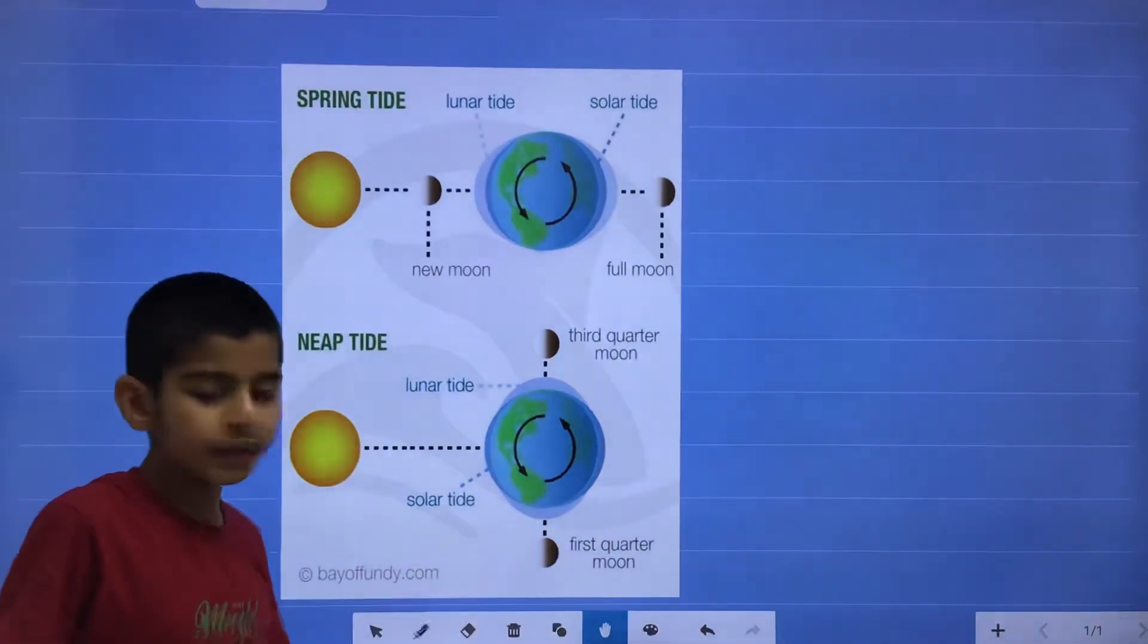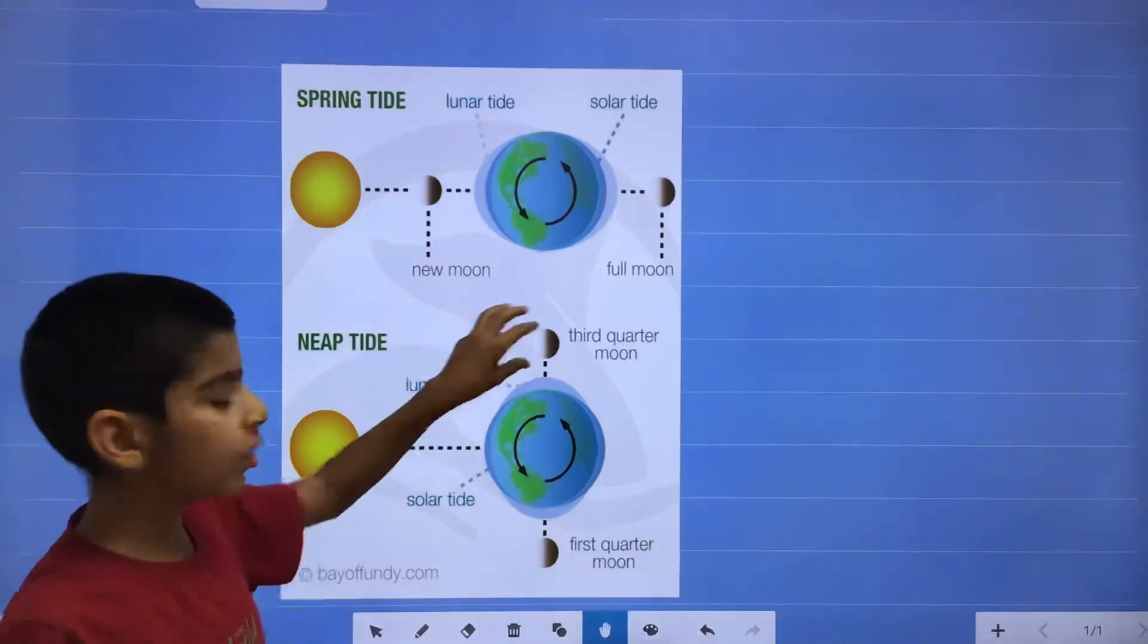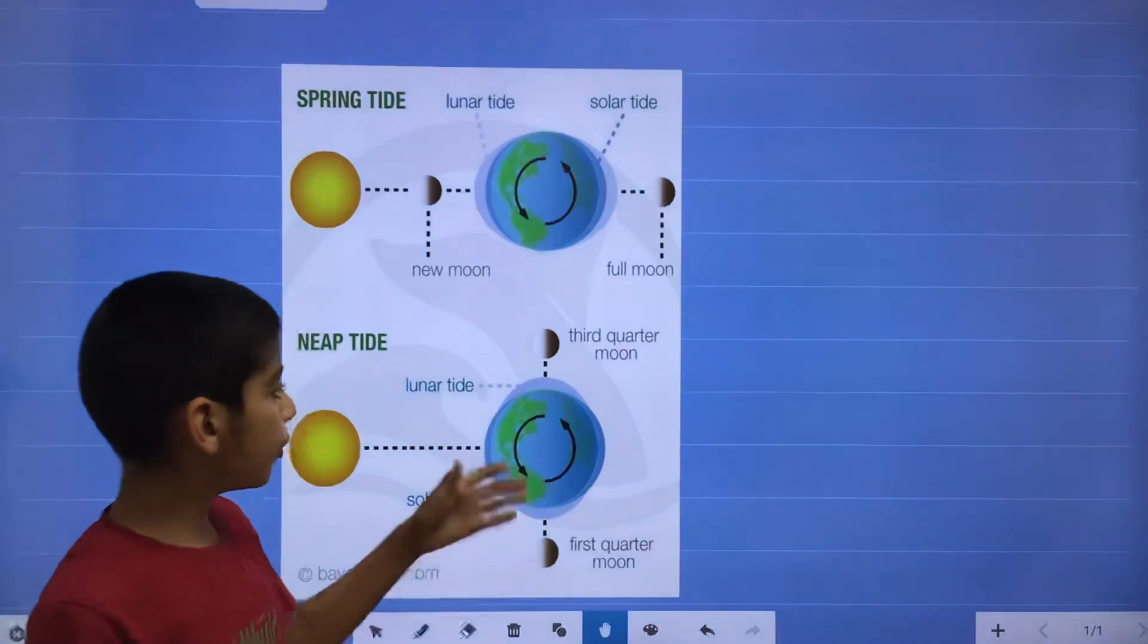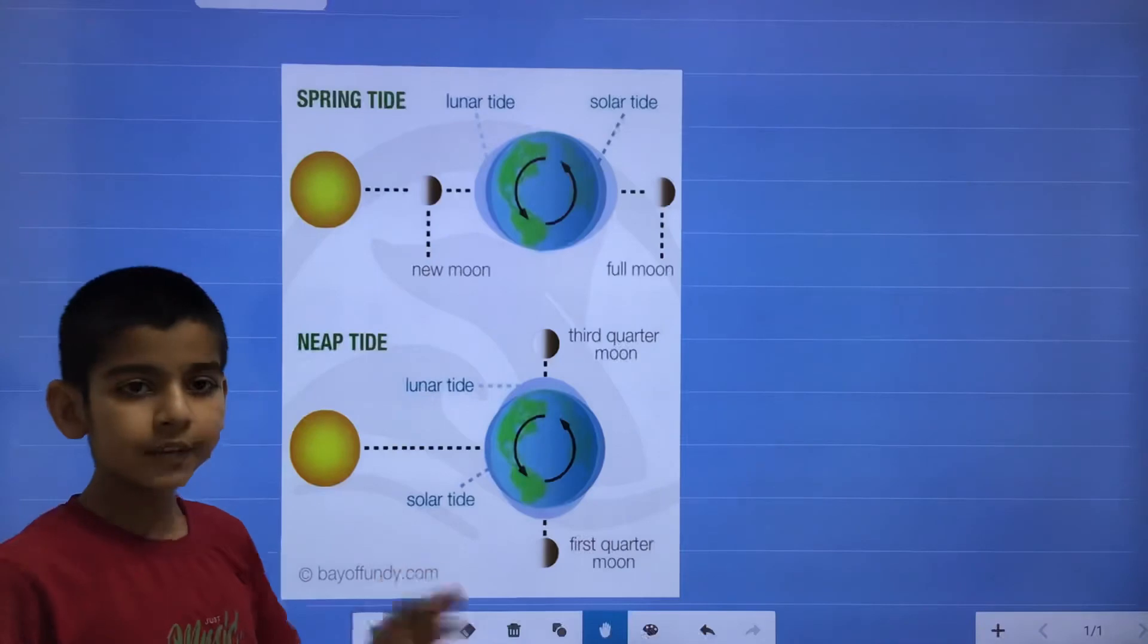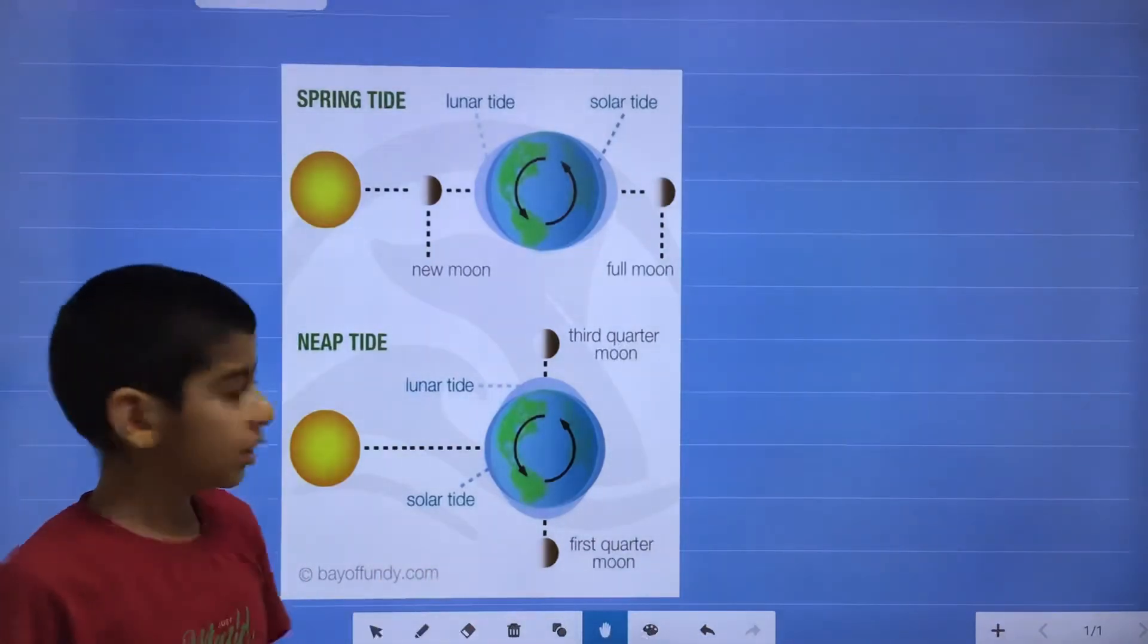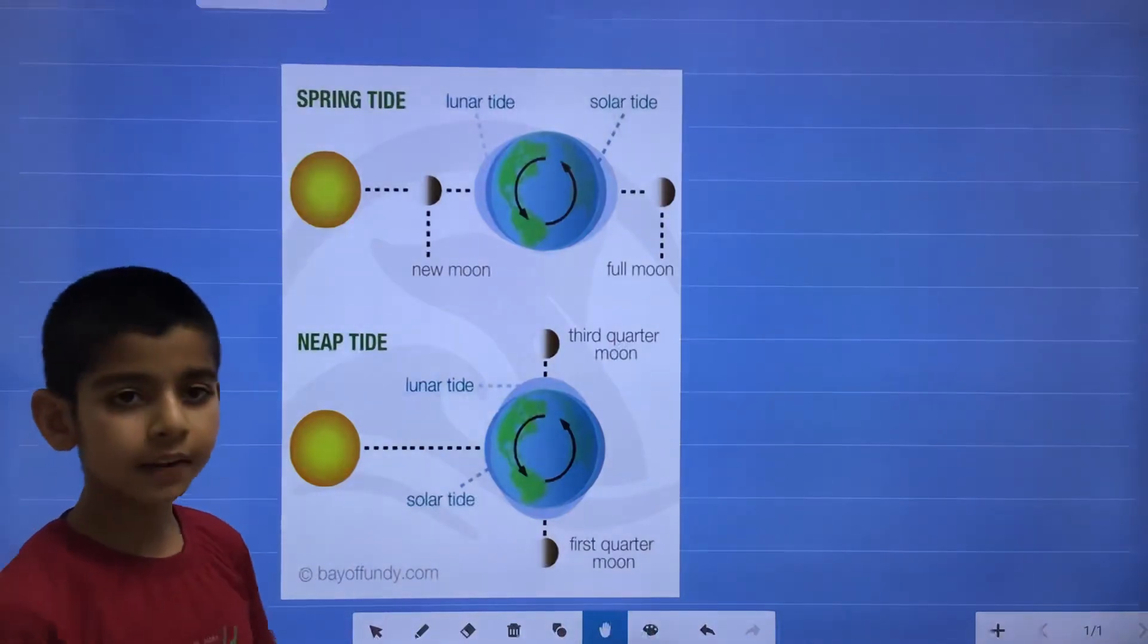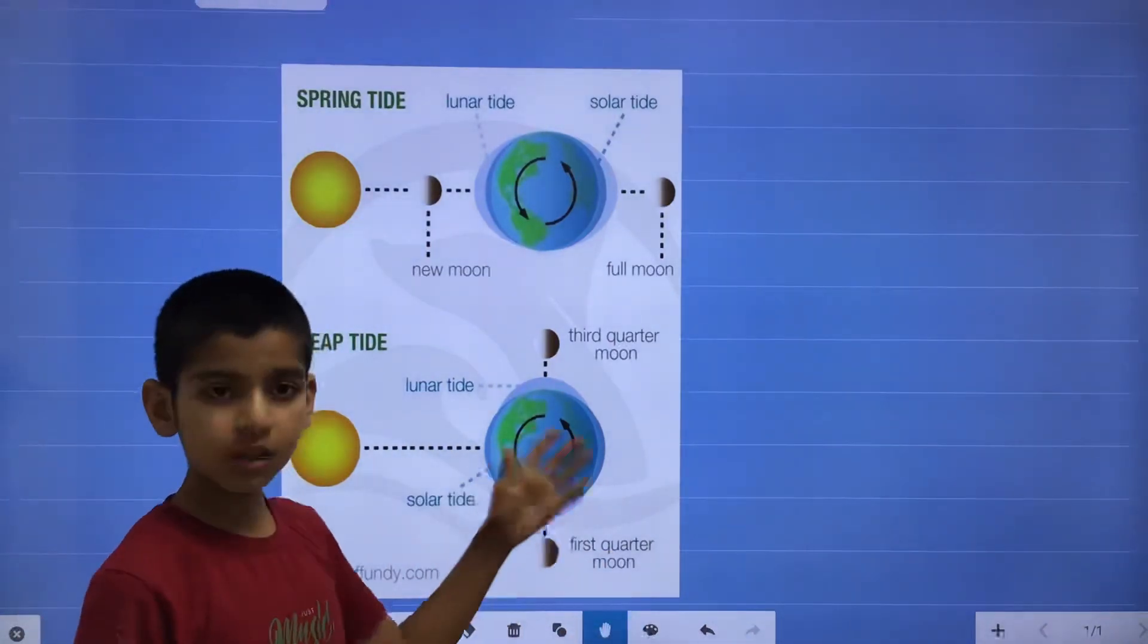And in neap tide, it occurs when the moon goes at the third quarter or the first quarter. So the pull by the sun is known as solar tide. And the pull by the moon is known as lunar tide. So it's at the right angle and this will cause a low tide.